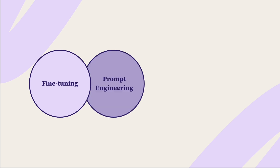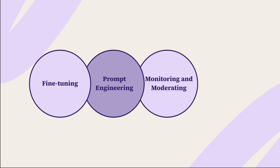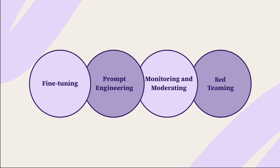We mitigate risk by using technical approaches such as fine-tuning the AI to help increase accuracy, prompt engineering to guide and narrow the focus of the AI, allowing us to tailor the AI for an educational setting, monitoring and moderating participant interactions so that we can flag potentially inappropriate content, and red-teaming to deliberately try to break or find flaws in the AI in order to uncover potential vulnerabilities.